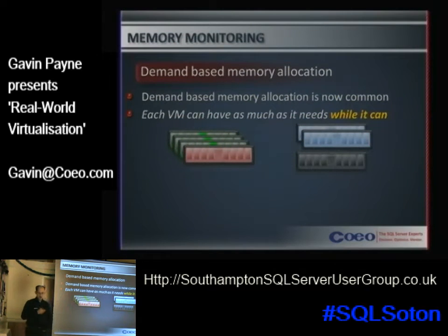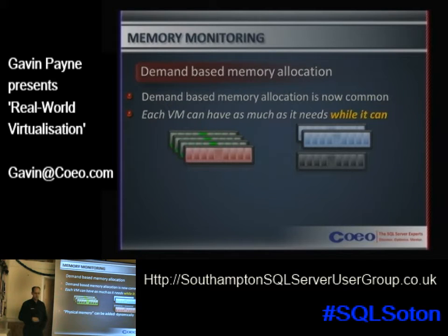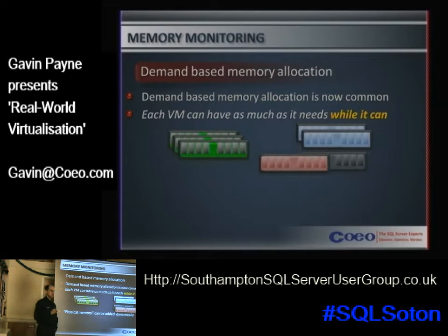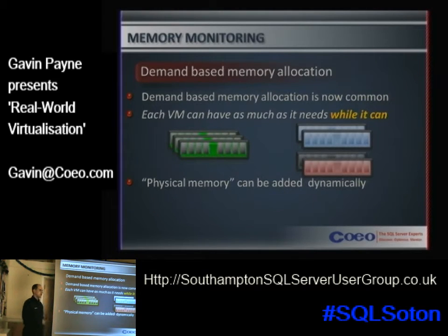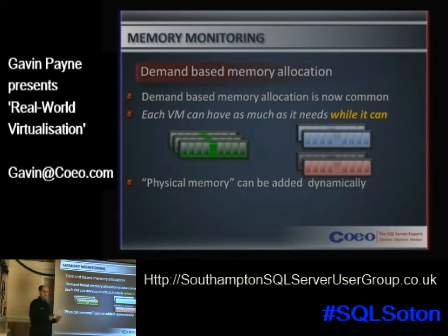The idea is that you can move memory between virtual machines based on demand. In the Hyper-V world, you will see this in Windows as your amount of physical memory increasing. VMware uses a slightly different model, but Hyper-V — which SQL Server is more natively aligned to — will tell Windows it now has more physical memory. That comes from the hot-add memory feature, so Hyper-V will recognise low memory and physically assign more of it.